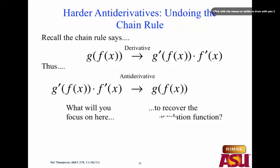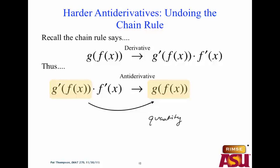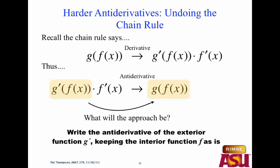Which do you focus on — g prime of f of x, or f prime of x? G prime. Which one is almost exactly the same as what we want? Going backwards, the f prime just gets absorbed — it's just gone — because we end up with g of f of x. So the approach is: write the antiderivative of the exterior function, keeping the interior function f as it is. That's the basic principle. Then there may be a factor to clean up, but we'll figure out which part is the g prime of f and then do the antiderivative of g — we're 90% there.